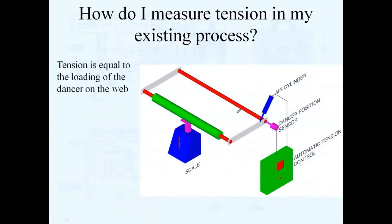If you have dancer rolls, how much loading you have on that dancer will literally tell you how much weight is on this roller. Your web is normally fed through this roller somehow, and how much weight is on that roller is going to be how much tension is on your web.